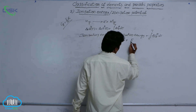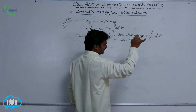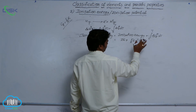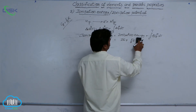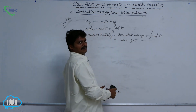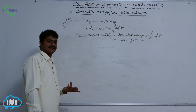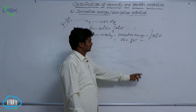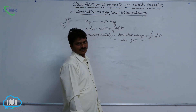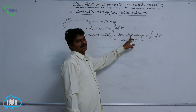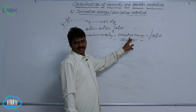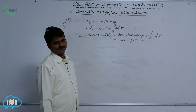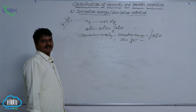So ΔCp integrating from 0 to T gives 5/2 R × T. Therefore, ionization enthalpy equals ionization energy plus 5/2 RT. We use this for the calculation of ionization enthalpy at a different temperature. Ionization energy is the energy required at 0 Kelvin; ionization enthalpy is the energy required at T Kelvin, where T means a certain temperature. This is all about ionization energy.